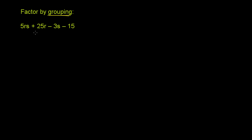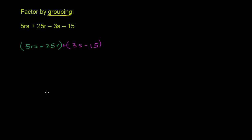So what we could do — like we just saw — 5rs and 25r are both divisible by 5 and r. So let's group those two together: 5rs plus 25r. Then we have minus 3s minus 15. These are good to group together because they're both divisible by 3. So we put a plus and group those two together.